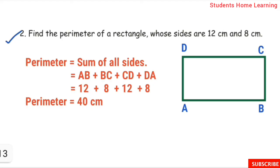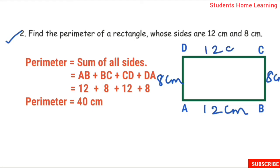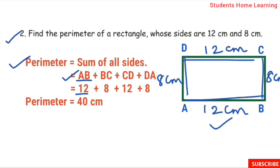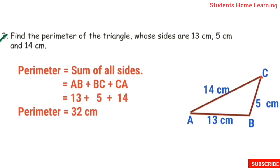Second sum: find the perimeter of a rectangle whose sides are 12 cm and 8 cm. Rectangle opposite sides are equal, so sides are 12 cm, 8 cm, 12 cm, 8 cm. Perimeter equals AB plus BC plus CD plus DA: 12 plus 8 plus 12 plus 8 equals 40 cm. Perimeter is equal to 40 cm.